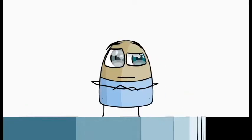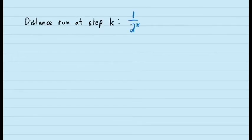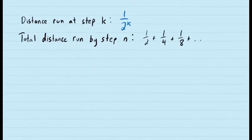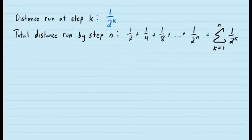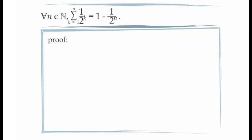To get started, let's have a look at the distances run by the runner at each stage. In the first stage, the runner runs half the distance. In the second stage, the runner runs a further one-quarter of the distance. And in the third stage, the runner runs a further one-eighth of the distance. This gives us, in general, at stage k, the runner runs a distance of 1 over 2 to the exponent k. This means the total distance run by the runner at the nth stage would be the sum, as k takes values from 1 to n, of the sequence f(k) = 1 over 2 to the power k. The first thing we can prove from this is that at the nth stage, the runner still has 1 over 2 to the power n of the distance left to run.